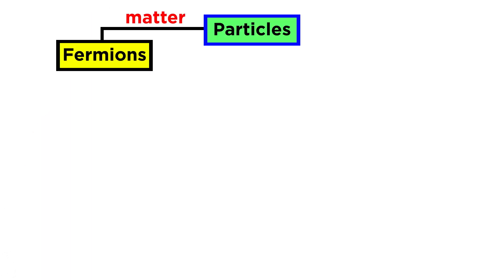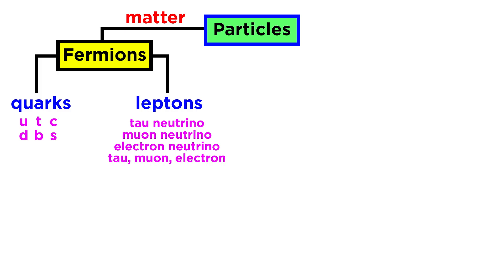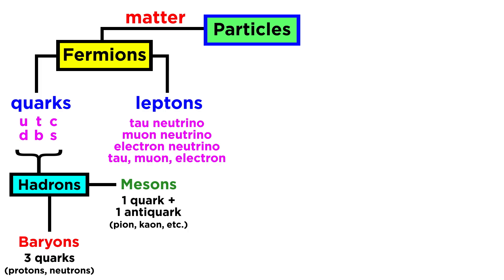Once again, matter is made of fermions. Fermions are comprised of quarks, which come in six varieties, and leptons, of which there are also six. Quarks combine to make hadrons, which are either mesons or baryons, depending on the quark combination. Protons and neutrons are the baryons that make up atomic nuclei, which come together with electrons from the lepton family to form atoms, which then form molecules and all of the matter we see every day.